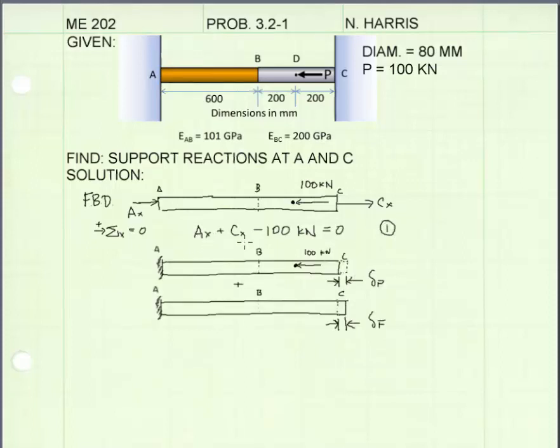Because there are two unknown reactions in this equation, and I have no further static equilibrium equations that I can apply, this member is statically indeterminate. That means I need to come up with my own new equation to be able to solve this problem.